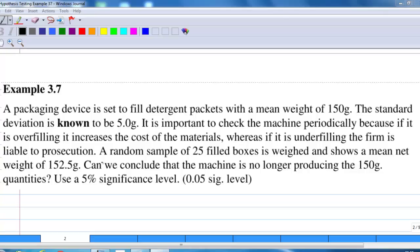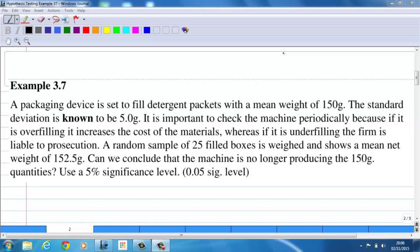A random sample of 25 fill boxes is weighed and shows a mean net weight of 152.5 grams. Can we conclude that the machine is no longer producing the 150 grams quantities? Use a 5% significance level, that is, 0.05 significance level.